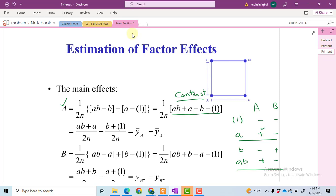So we keep A and B with the plus sign, whereas the terms in which A is at low level, like this one and B, we write those terms with the negative sign for the contrast of A. After computing this contrast term, we divide it by 2.